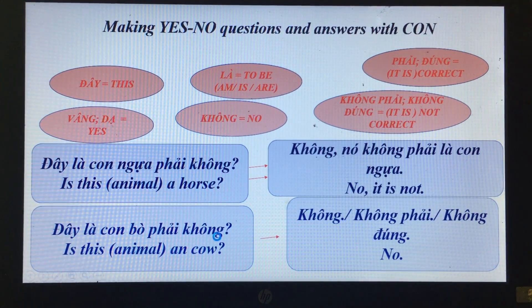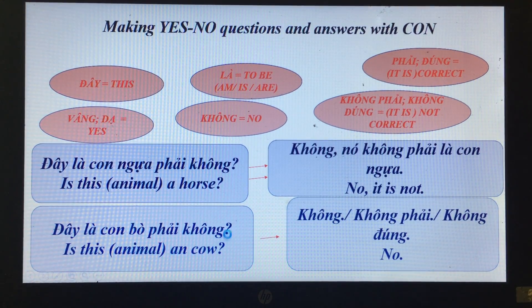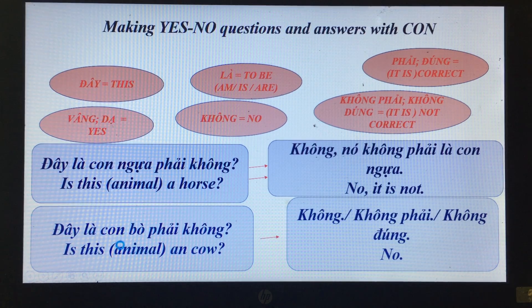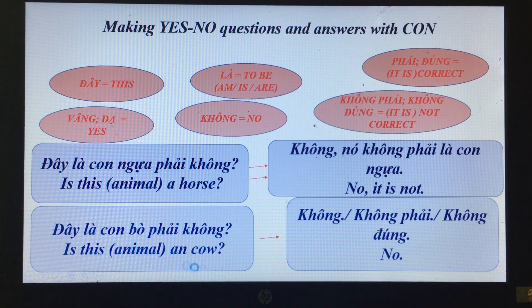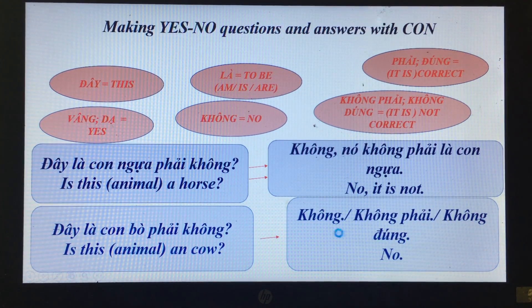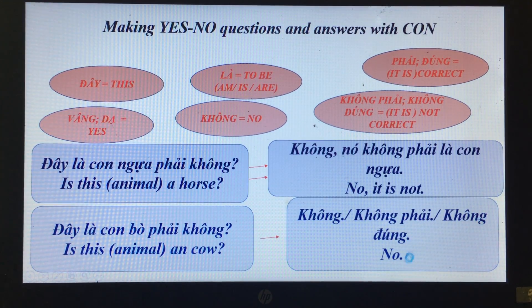'Đây là con bò, phải không?' — Is this animal a cow? 'Không, không phải, không đúng.' — No, this is not.